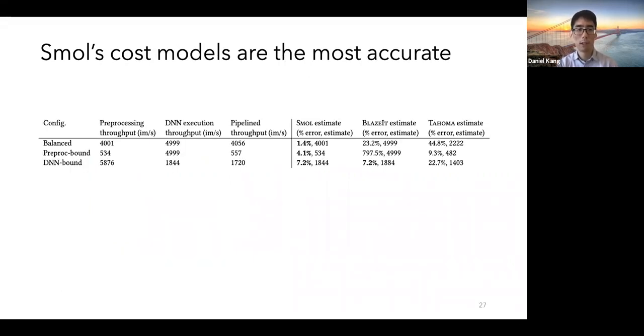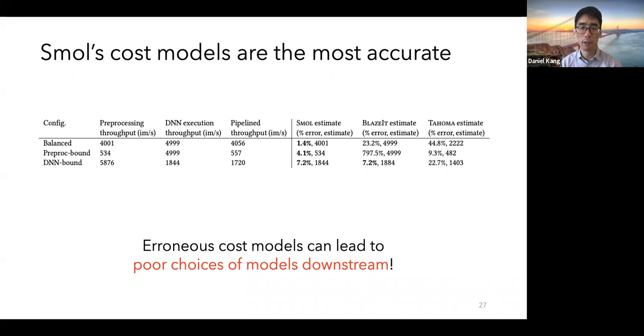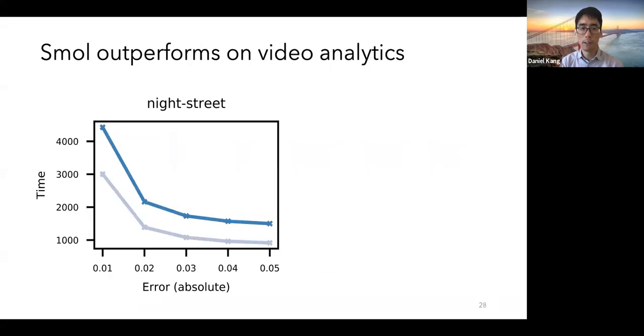I also show that Smol's cost models are the most accurate. Here we're showing three different configurations for different query execution plans: a balanced configuration, a pre-processing bound configuration, and a DNN bound configuration. As we can see, Smol results in the smallest error across all three cost estimations. And this is important because erroneous cost models can lead to poor choices of models downstream, which we in fact see for the visual analytics task.